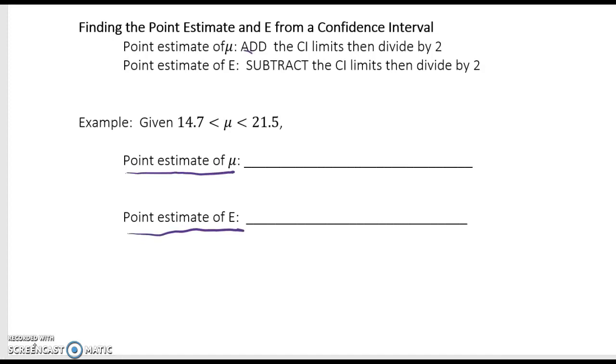So to find the point estimate of mu we're going to add the limits of our confidence interval. So we'll say 14.7 plus 21.5 and then divide by two. And that's going to give us 18.1.